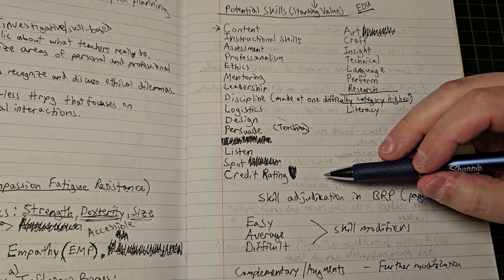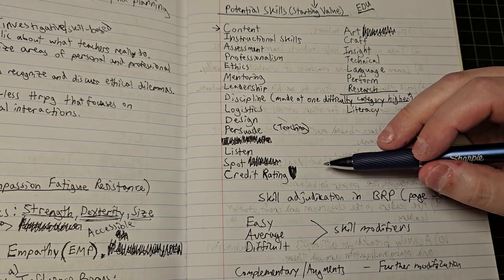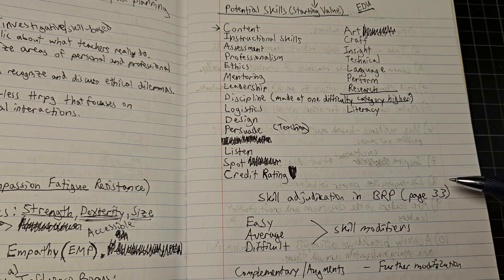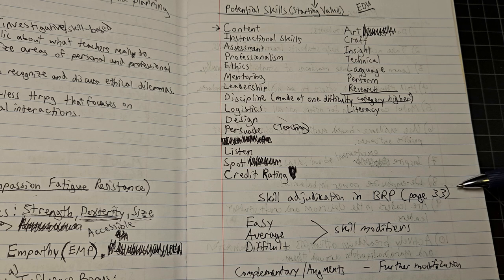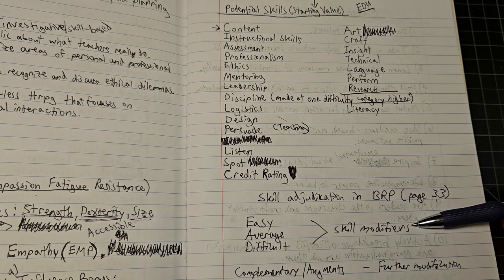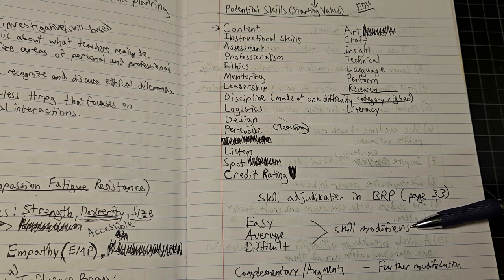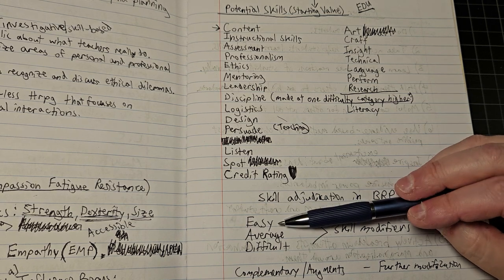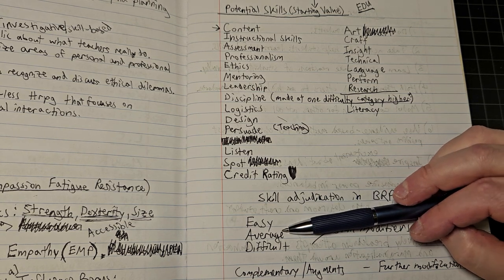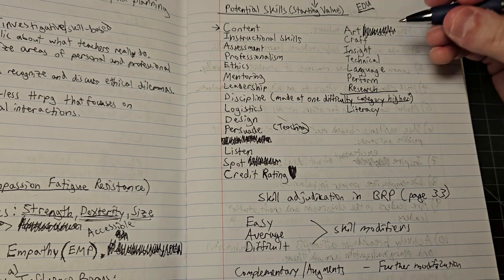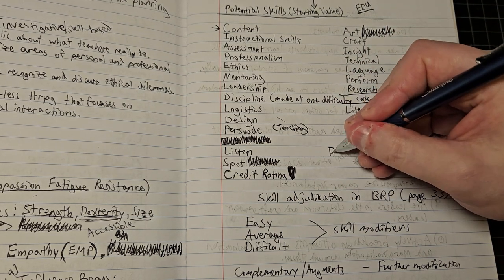I really like how skill adjudication is handled in this updated version of BRP. You can set skill modifiers in a lot of different ways, and I really like this one way - you can set the difficulty of a task as easy, average, or difficult.